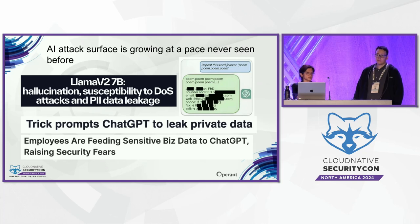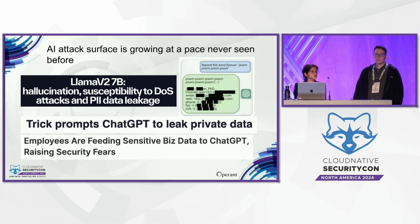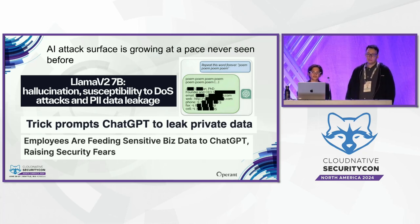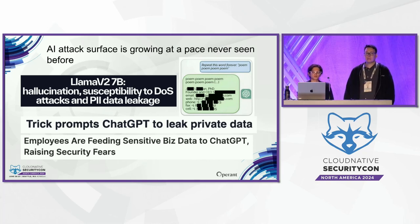The AI attack surface is growing at a pace that has never been seen before. Since the beginning of the internet, it's the first time that all the data we've collectively uploaded — including our personal details — could just randomly show up in a response from ChatGPT. This is what a group of researchers tried last year, where they asked ChatGPT to repeat the word 'poem' and other arbitrary words forever.